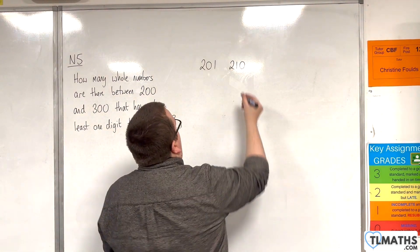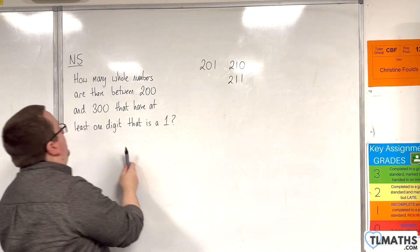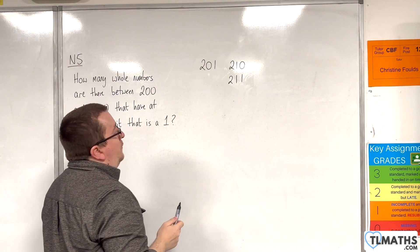So that's our next one. And then we would have 211. Now, we're allowed repetition because it's at least one digit that is a 1. So 211 is fine.